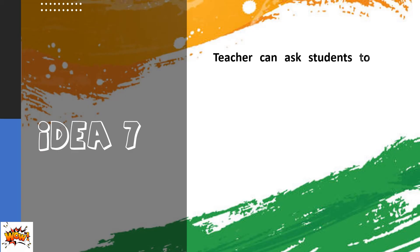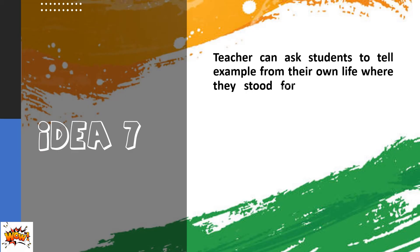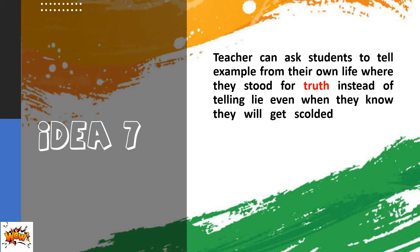Idea seven: The teacher can ask students to share examples from their own lives where they chose truth instead of telling lies, even when they knew they would get scolded for it. This will be interesting and inspiring for other students to follow the path of truth in their own lives.